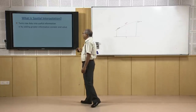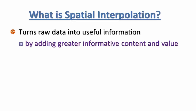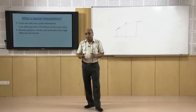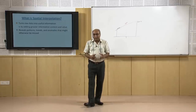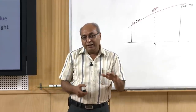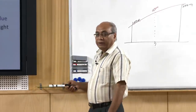Spatial interpolation turns raw or discrete data into continuous data or useful information. It adds greater informative content and value, because it is very difficult to understand terrain using just point data or contour data. But if you have a surface representing the same area, the terrain can be understood very well.